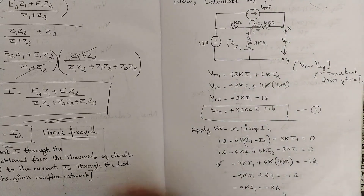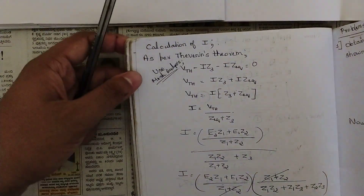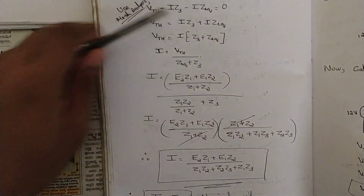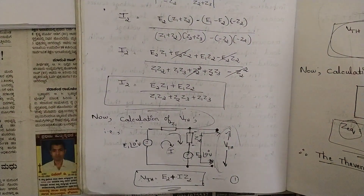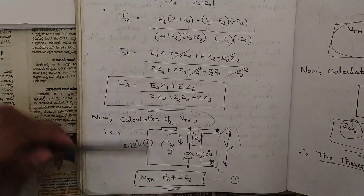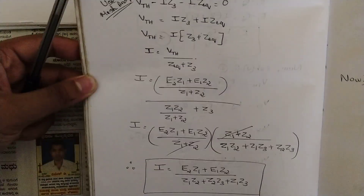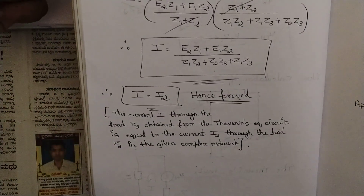Close the loop by adding back the load impedance that was removed at the start — this completes the Thevenin equivalent circuit. This also covers the calculation of current using mesh analysis considering the V_th voltage. This proof section is not strictly necessary; if needed, you can pause the video and refer to it.